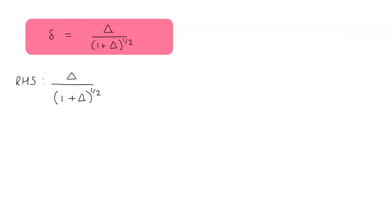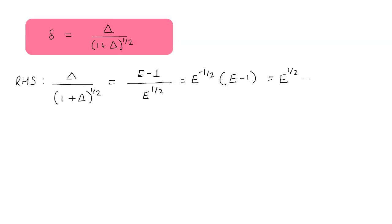Now let us prove the relation between the central difference operator and the forward difference operator. Starting with the right-hand side, we convert the forward difference operator in terms of shift operator. We have Δ = E - 1, and the denominator √(1 + Δ) becomes E^(1/2). Taking E^(-1/2) to the numerator gives E^(-1/2)(E - 1), which opens to E^(1/2) - E^(-1/2), which equals delta. This proves the result.